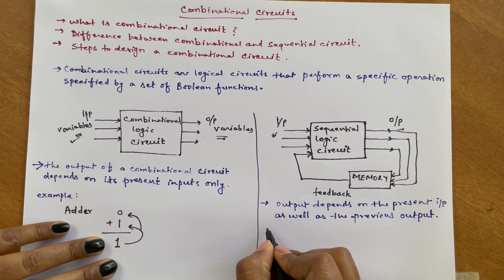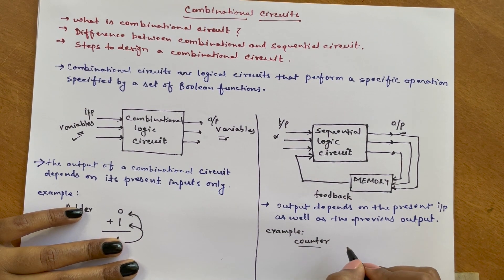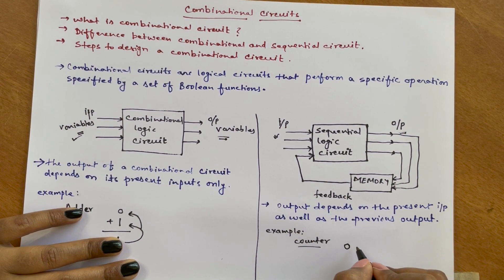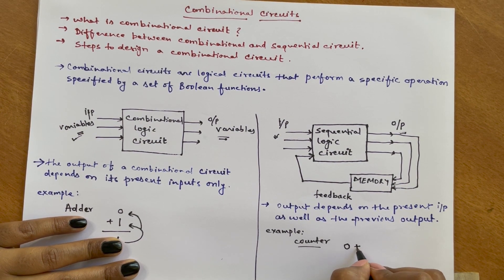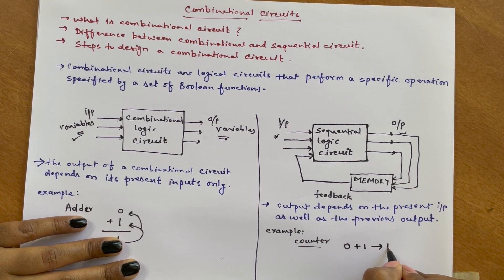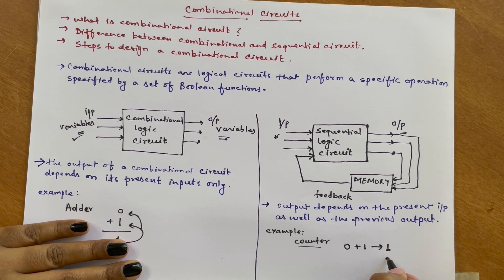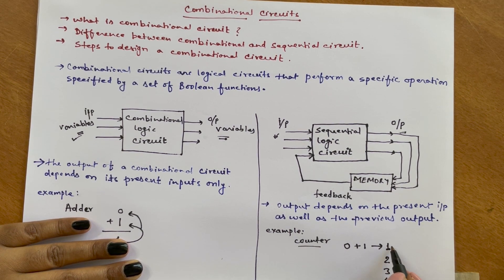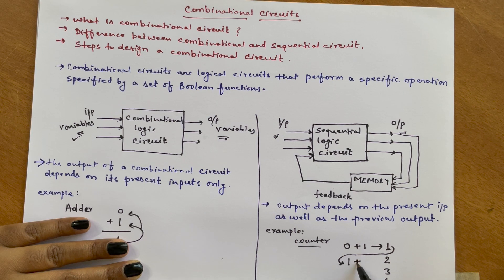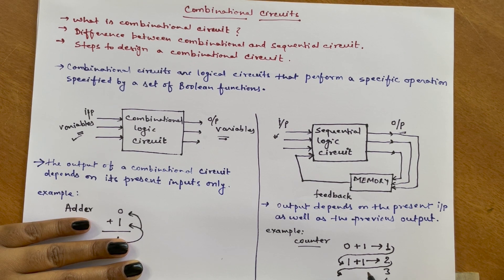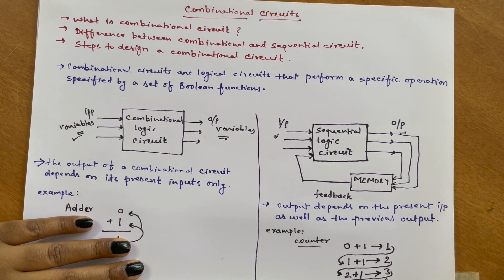An example of a sequential logic circuit is a counter. Suppose a digit 0 is given to a counter — it will add 1 and generate the output 1. The next output will be 2, then 3, then 4, and so on. This output is fed back to the input via feedback, and the counter adds 1 to generate each next output.